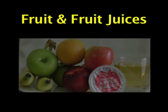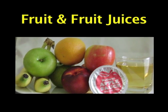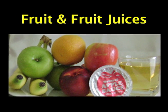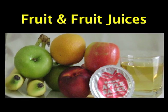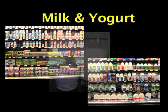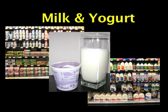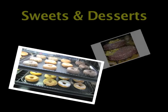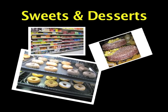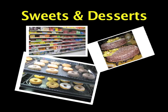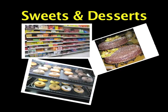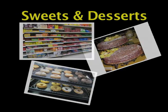Fruit and juices also contain carbohydrate. Fresh, frozen, dried, and canned fruits are all included in this group. Milk and yogurt are the next carbohydrate group. Most people think that people with diabetes cannot have sugar in their diet. However, you can eat sweets and desserts in moderation as long as you count the amount of carbohydrate in them into your insulin management plan.